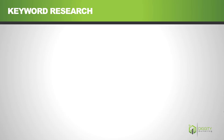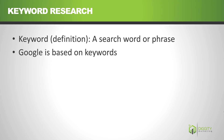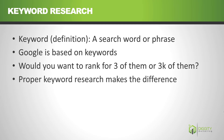It starts with proper keyword research. A keyword is basically just a search word or phrase. If you type 'best gaming chair' into Google, 'best gaming chair' is your keyword. Google is based on keywords — you're going to get a different result if you type 'funny cats' versus 'funny cat'. Now if you're taking the time to write a 10,000 word article on gaming chairs, you want to make sure that this page is optimized for as many keywords as possible, and you need keyword research to figure out what people are searching for.